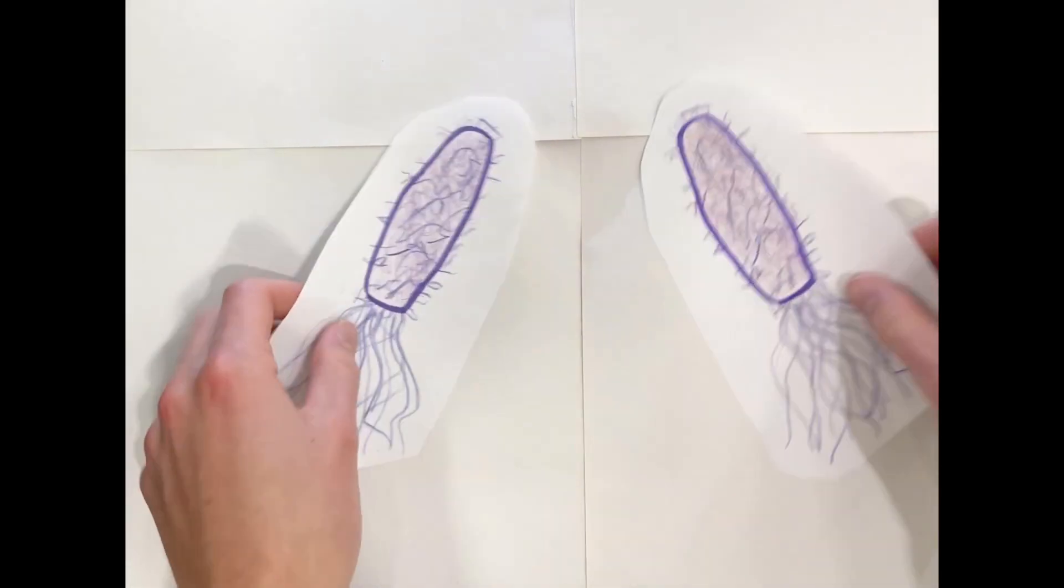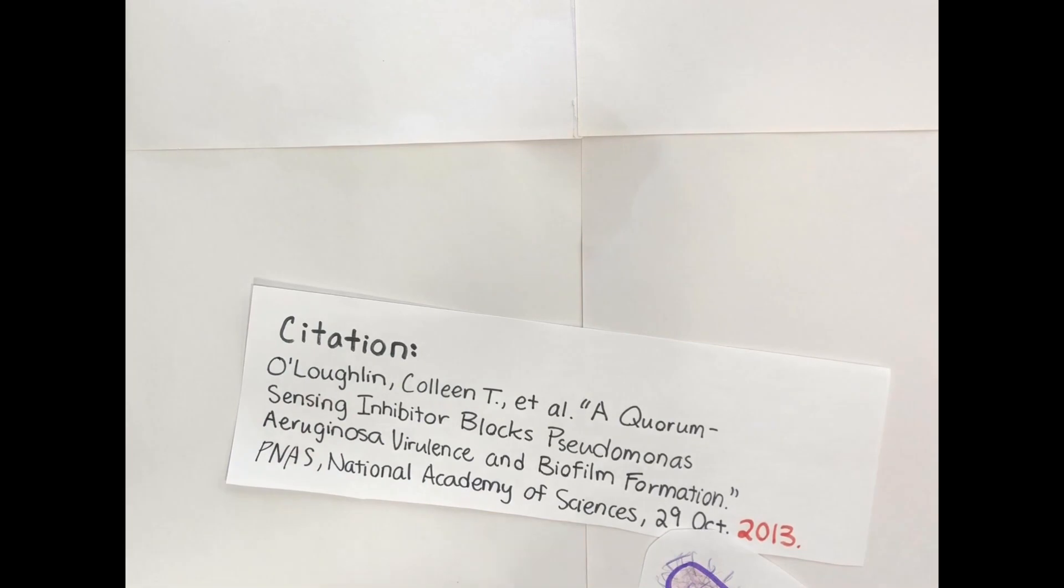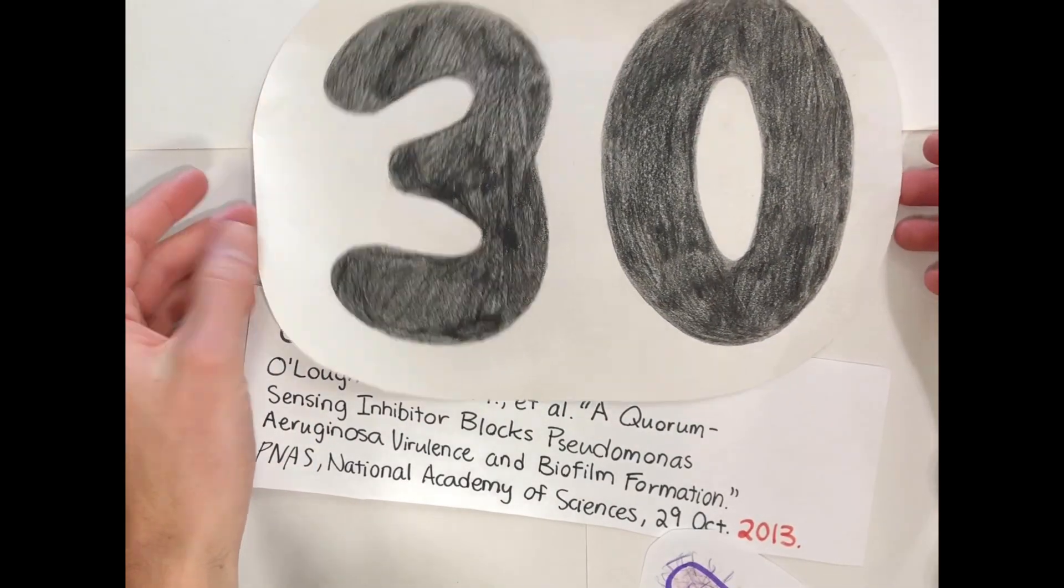To combat Pseudomonas aeruginosa, researcher Lachlan and her constituents synthetically created over 30 inhibitors. The team of researchers focused on three: CTL, MCTL, and MBTL.